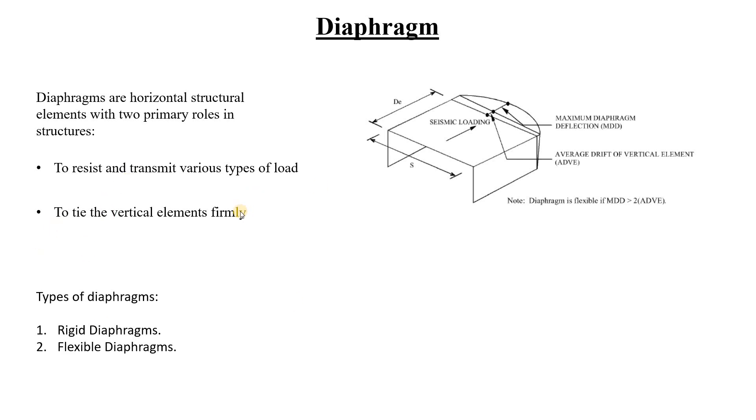Let me give you an example so you'll understand better. But before that, diaphragms are horizontal structural elements. If you consider a building, what are the horizontal members or horizontal elements? The horizontal elements are the beams and the slabs.